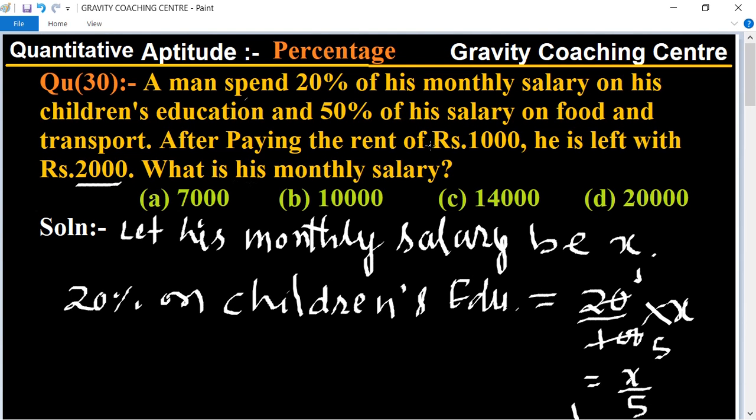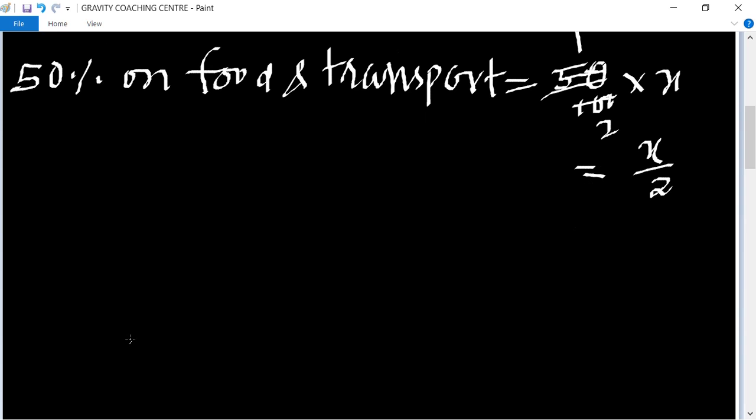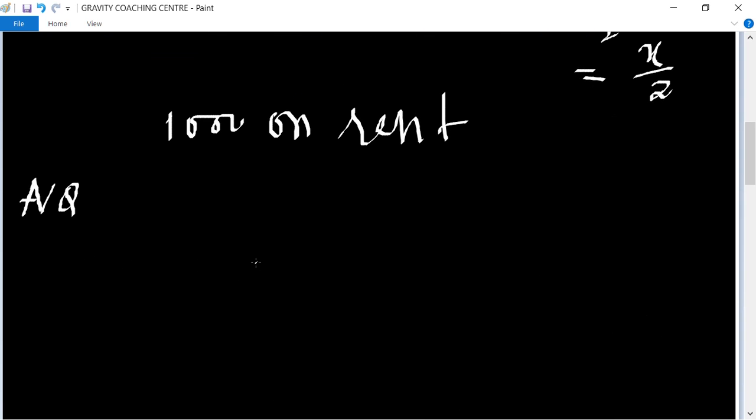1,000 on rent. So 1,000 spent on rent. According to the question, X upon 5 plus X upon 2 plus 1,000, and his saving is Rs. 2000, equal to the total salary is X.